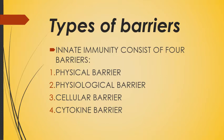Types of barriers. Innate immunity consists of four barriers. Number one is physical barrier. Number two is physiological barrier. Number three is cellular barrier. And the last one is cytokinin barrier. We will discuss each barrier one by one.